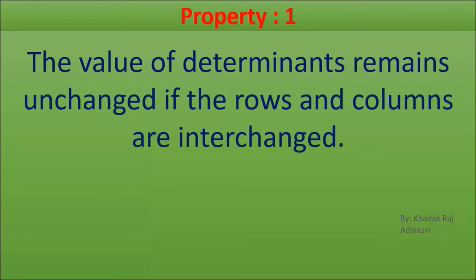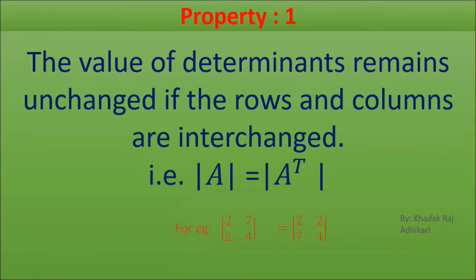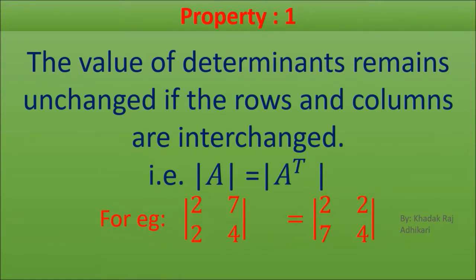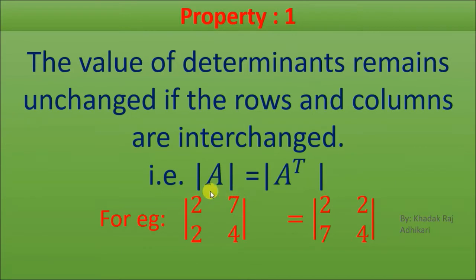Property 1: The value of a determinant remains unchanged if the rows and columns of the determinant are interchanged. When we interchange rows and columns, their values will come out the same. Let's see the examples. The first example shows a 2x2 matrix determinant and we calculate its determinant.